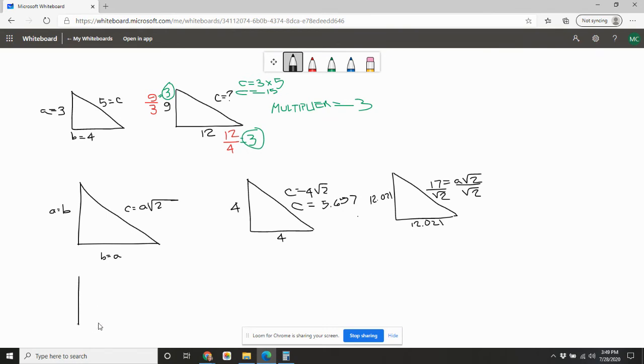And then the last type of triangle is the 30, 60, 90. So we get 90 here. We've got 30 here and we've got 60 here. We have A, B, and C. C equals 2 times A. B equals A times the square root of 3. So all I need is one number if I know I'm working with a 30, 60, 90 triangle. I have to know that I'm working with a 30, 60, 90 triangle though.